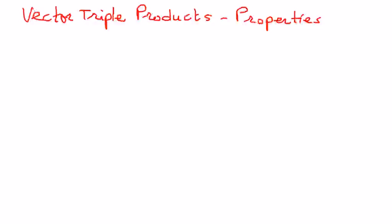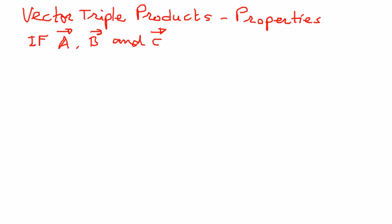If A, B, and C are vectors, then the following properties are true.